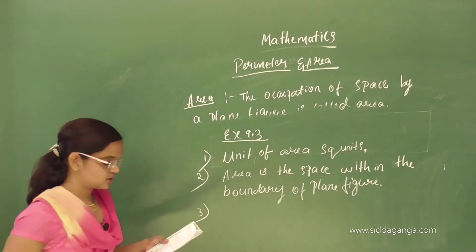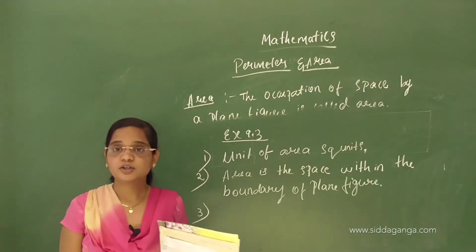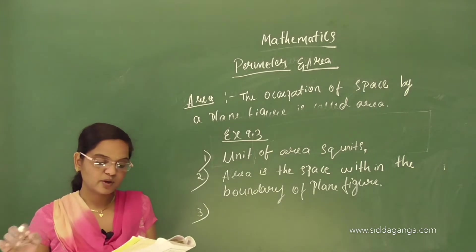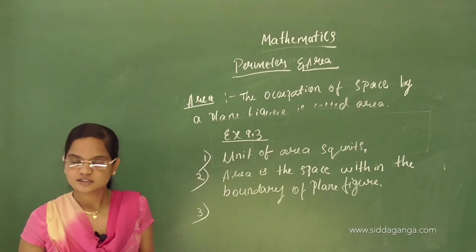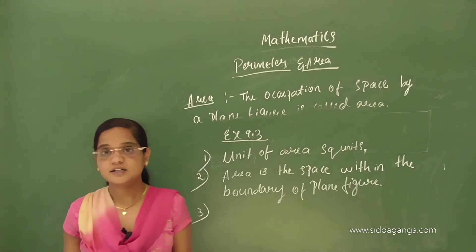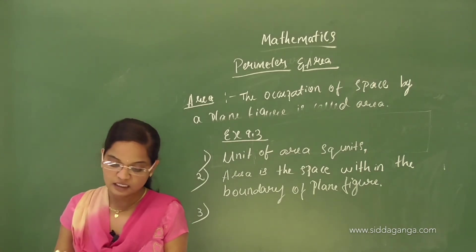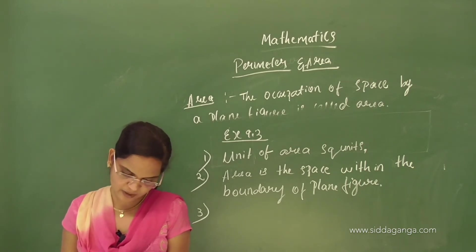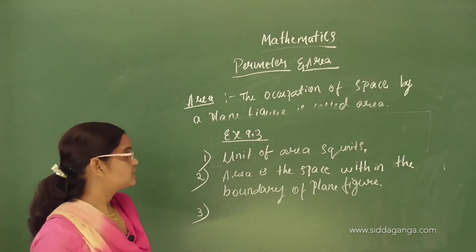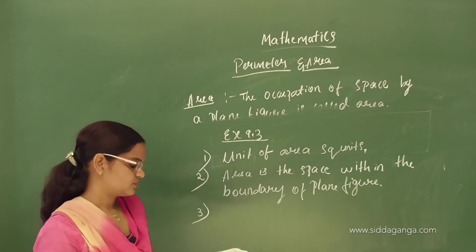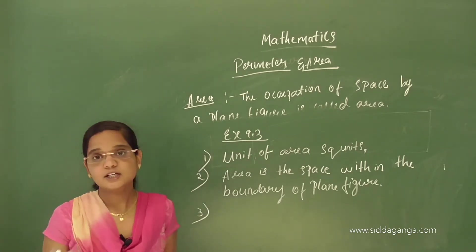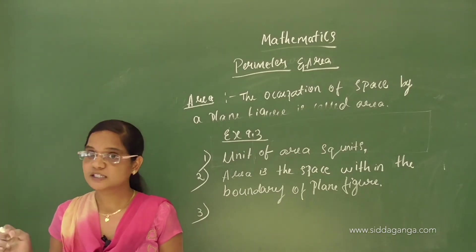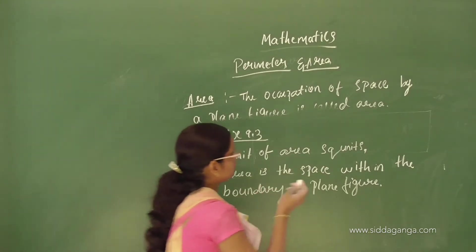Third question: what is the area of a unit square? One unit square has area one. The area of a square formula is length into length. I can explain using this rectangle: area of square equals length into length.